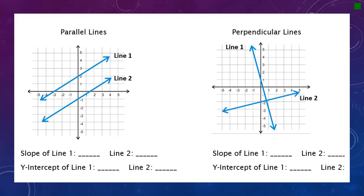What you want to do is find a point where the line crosses through at an exact number. For line one, I noticed this point right here — it crosses exactly through at the point negative three, zero. Then I see two more points. We only need two, so let's use negative three, zero and zero, two. As long as you have two solid points, that's all you really need.